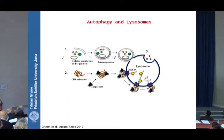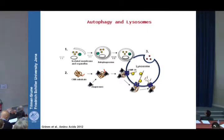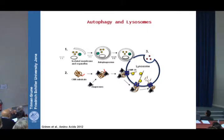One is microautophagy, which involves the lysosome membrane enclosing smaller parts of the cytosol. Another is macroautophagy, where a new membrane grows in the cell enclosing cellular organelles and parts of the cytosol in an autophagosome, which then fuses with the lysosome.